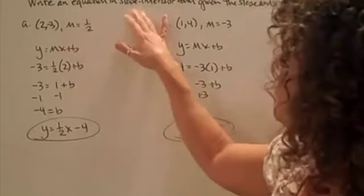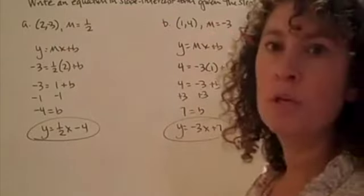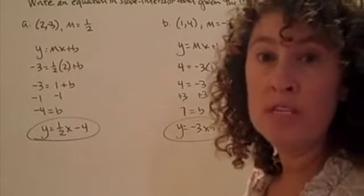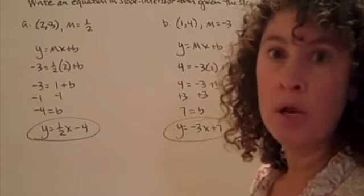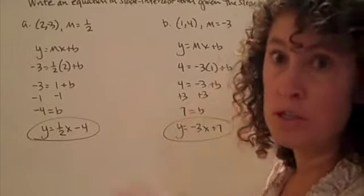We're going to write an equation in slope-intercept form when we're given the slope and a point. In order to write an equation, we really need two pieces of information. We can have two points, we can have a slope and a point, but we need to have two pieces of information in order to create an equation.